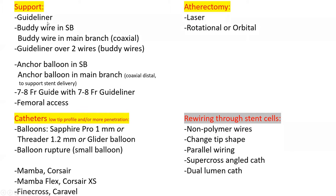The first axis is how to improve your support. One is to use guideliners, which we did. Another idea is to use body wire — there are two types: side branch and coaxial. You can advance guideliners over body wires. You can use anchor balloons in the side branch or coaxially in the main branch. You can increase your guide size and put inside that bigger guide bigger guideliners, and you can do femoral axis instead of radial axis.